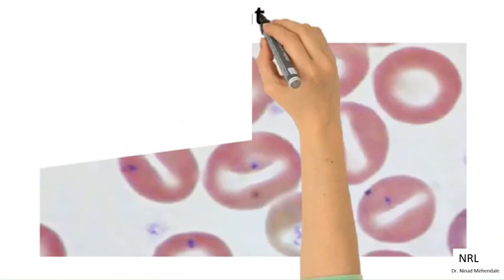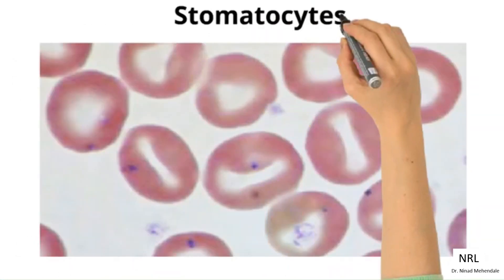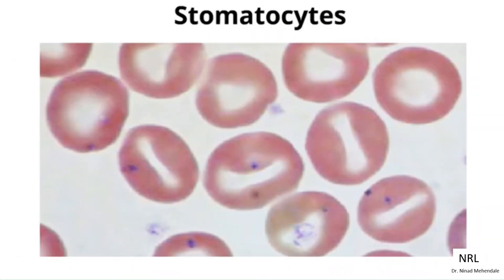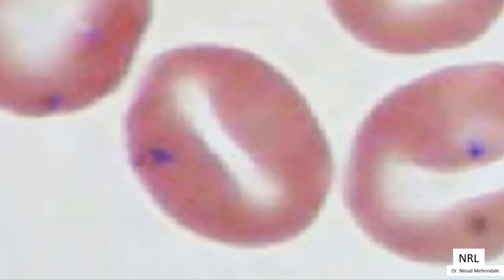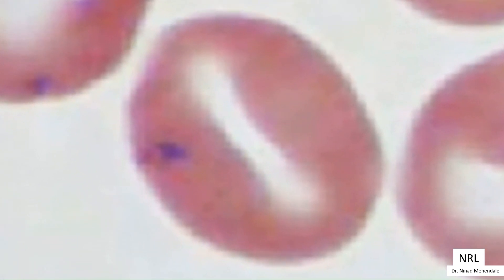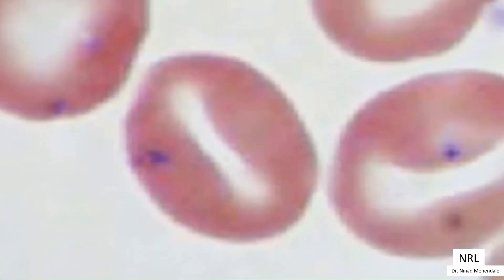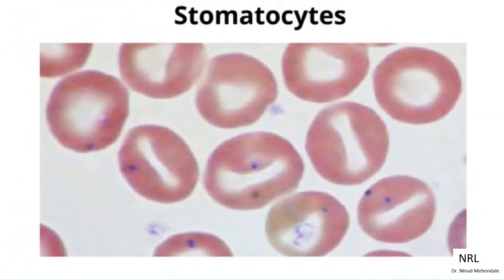Case 3: Stomatocytes. Stomatocytes are erythrocytes with a slit-like central pallor, giving them the appearance of coffee beans or kissing lips. They are seen in cases of stomatocytosis.